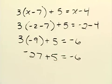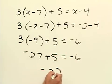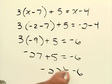Simplify negative 27 plus 5 and that will give us negative 22 equals negative 6. And since negative 22 does not equal negative 6, negative 2 is not a solution of this equation.